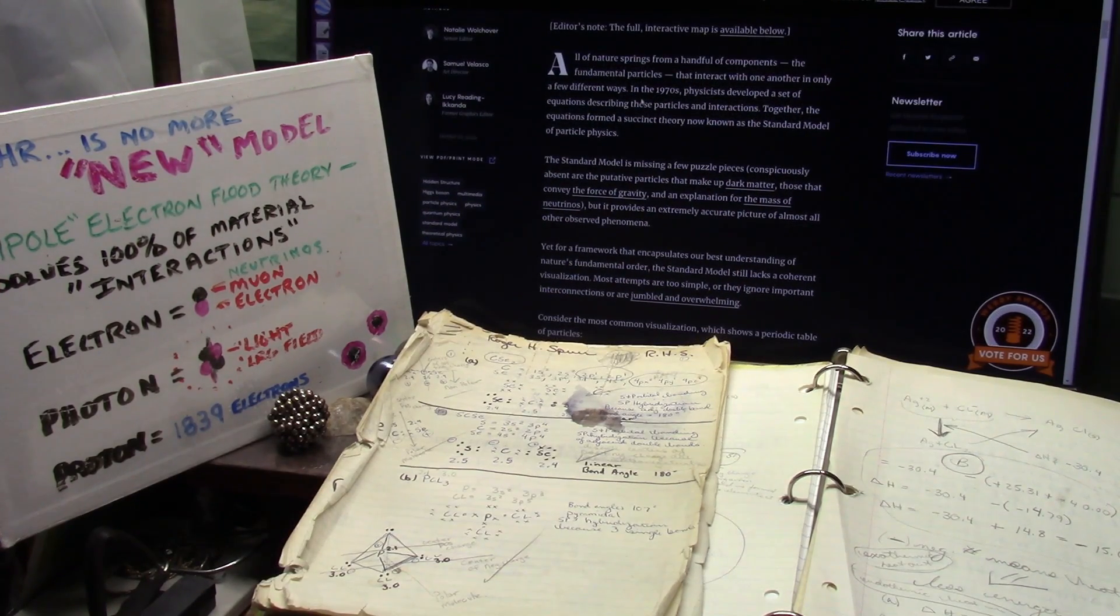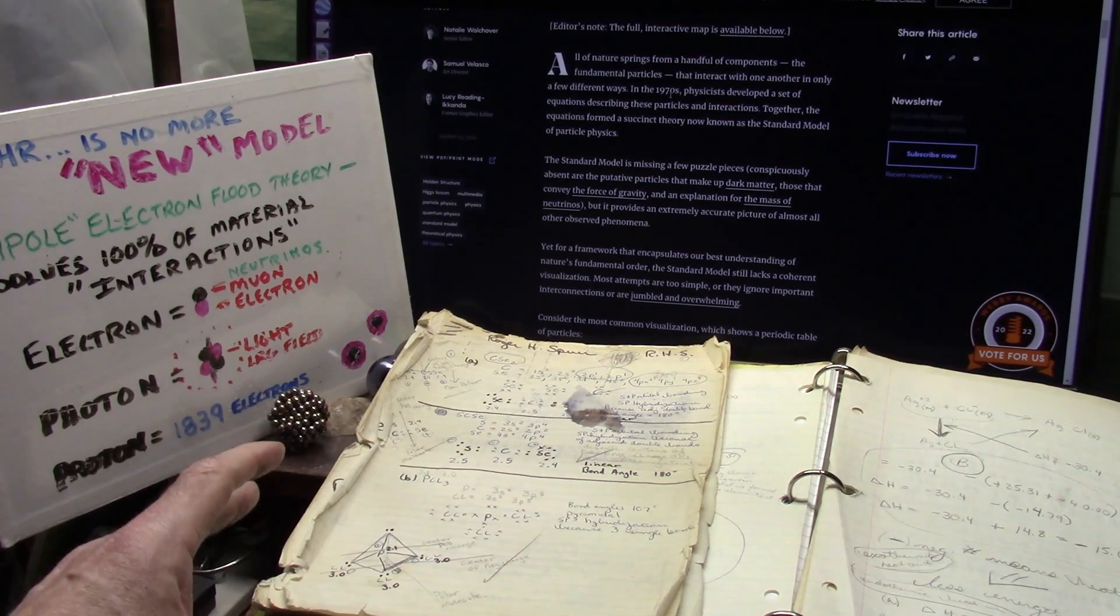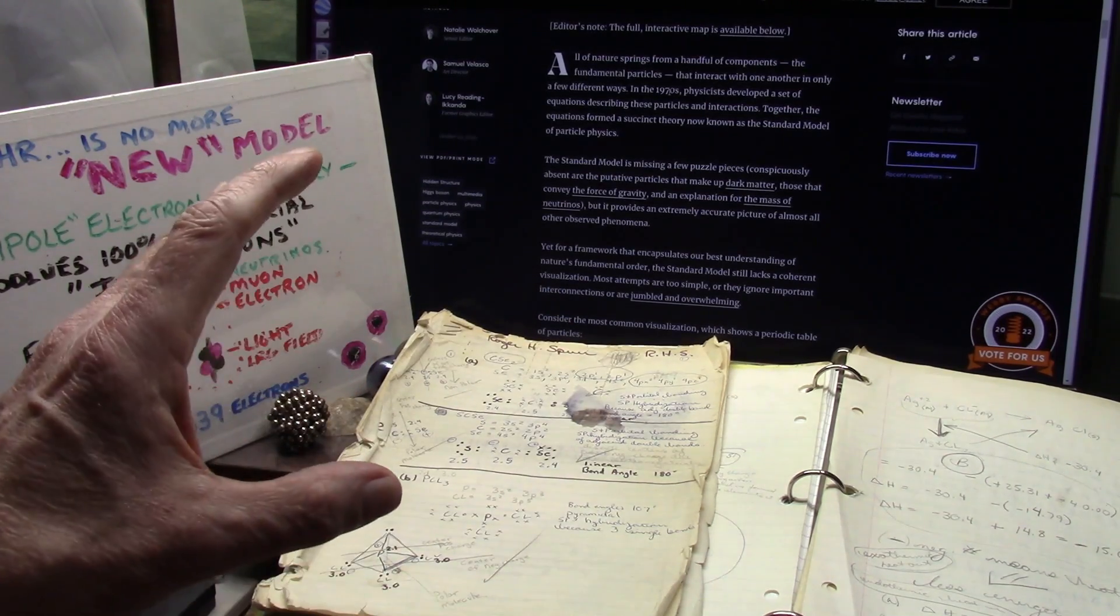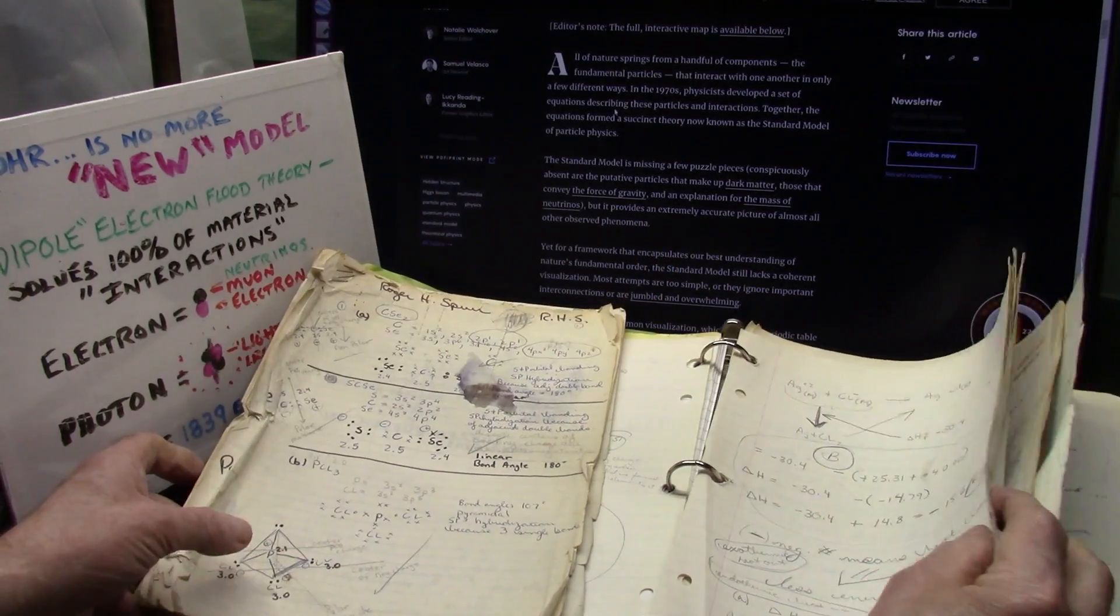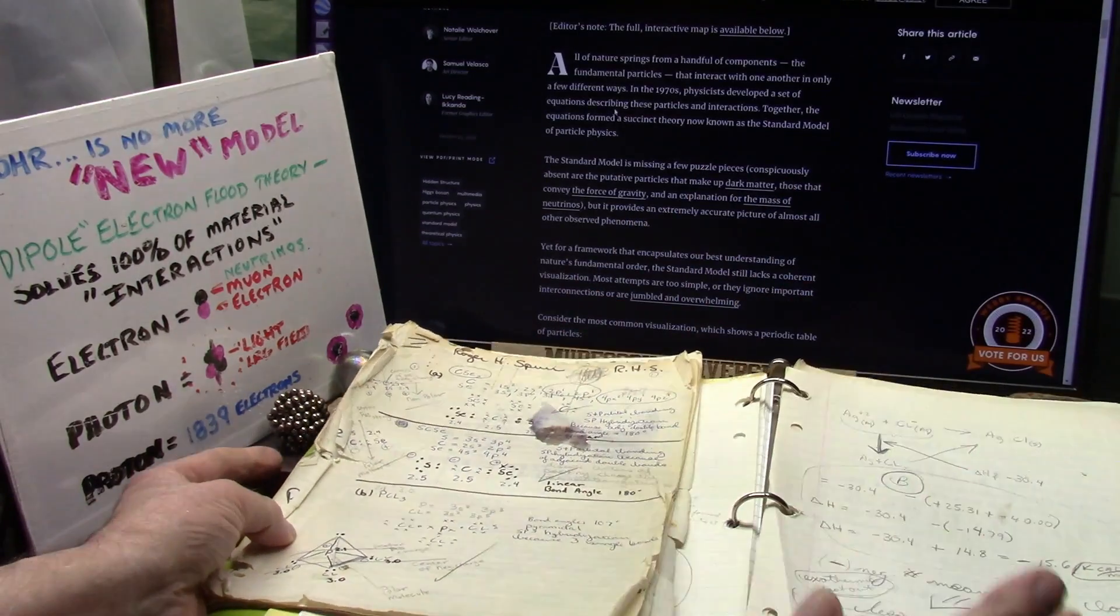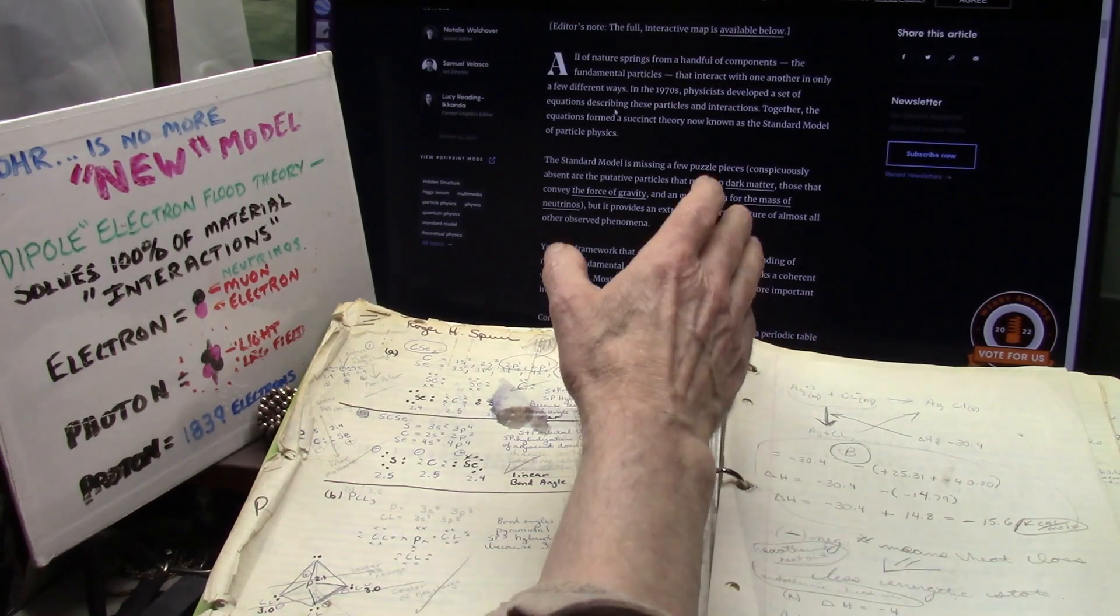And they have a new model. What is the new model of the Bohr model? It says, all of nature springs from a handful of components, the fundamental particles. They interact with one another in only a few different ways. 1970s, which was when I was heavily involved in this. In 1968, I was in the Army, Nike, Hercules, missiles, and so forth. And I got out, and right away, I went into physics. And then it didn't work out well, because I realized everything was a dipole. So, here, in 1970s, physicists developed a set of equations. And that's all they were, is little doodles. And I have, I did them all. I did every one of them. I'll show you them in a minute, because I want you to understand. I know what I'm talking about.